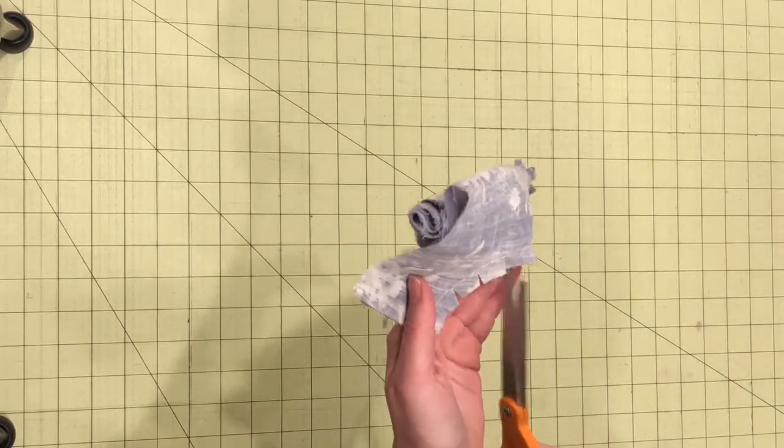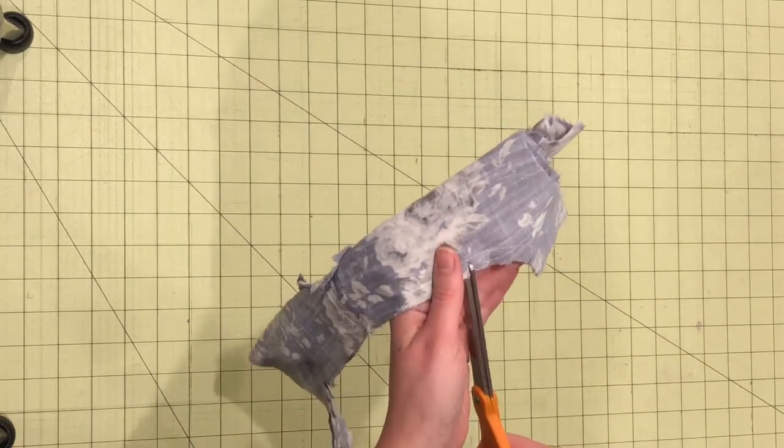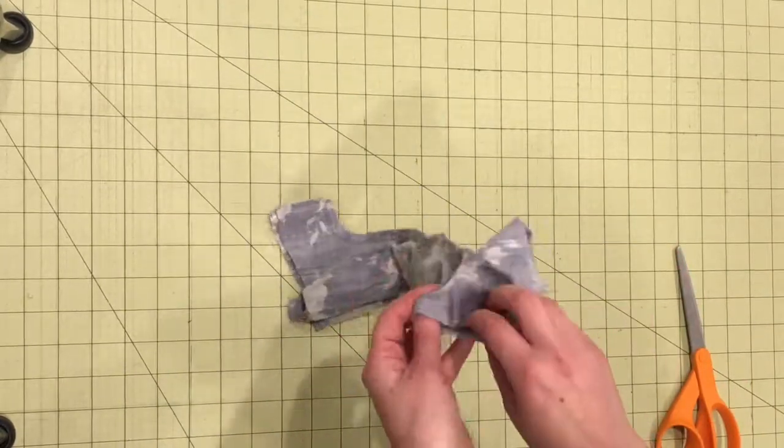Then clip notches in the curve, careful not to clip through your stitches, and then you're going to turn the bodice right side out by pulling it through the rolled up tube.